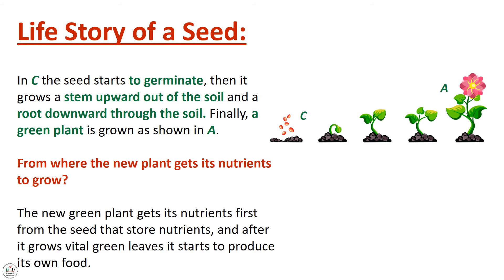The new green plant gets its nutrients first from the seed, which stores nutrients. After it grows vital green leaves, it starts to produce its own food. يعني النبتة الخضراء أخذت غذاءها أول شي من الحبة اللي خزنت لها الغذاء، وبعدين لما صار عندها أوراق خضراء صارت تنتج غذاءها بنفسها.